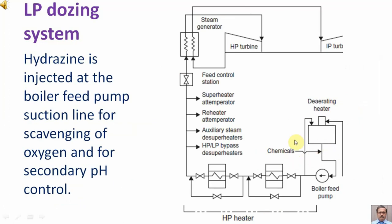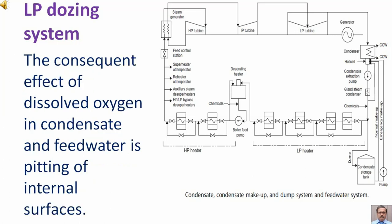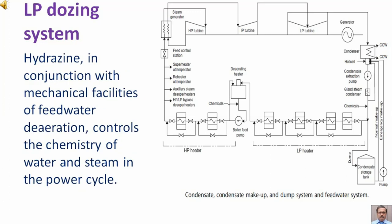Hydrazine is injected into the boiler feed pump suction line for scavenging of oxygen and for secondary pH control. The presence of oxygen leads to corrosion of boiler internal surfaces, and the consequence of dissolved oxygen in condensate and feed water is pitting of internal surfaces. Hydrazine, in conjunction with mechanical facilities of feed water deaeration, controls the chemistry of water and steam in the power cycle.